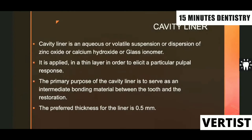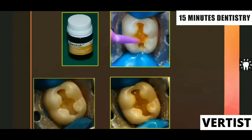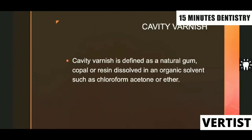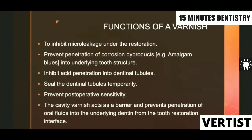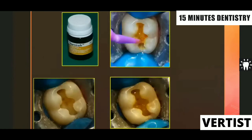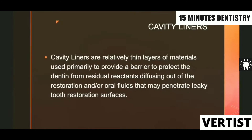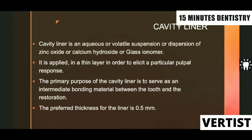To summarize the difference: a varnish is a plain natural gum, copal, or resin dissolved in an organic solvent — its job is only to prevent microleakage. When you add or suspend calcium hydroxide, zinc oxide, or glass ionomer as a medicament, it becomes a cavity liner. Again, both provide only chemical protection.